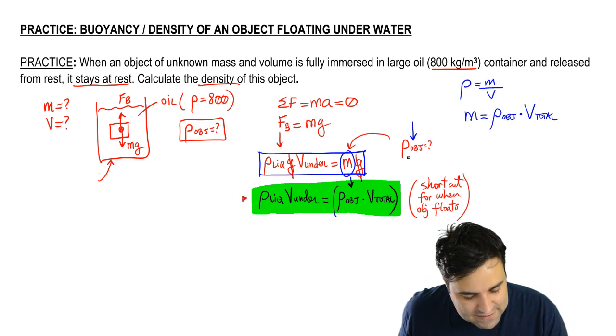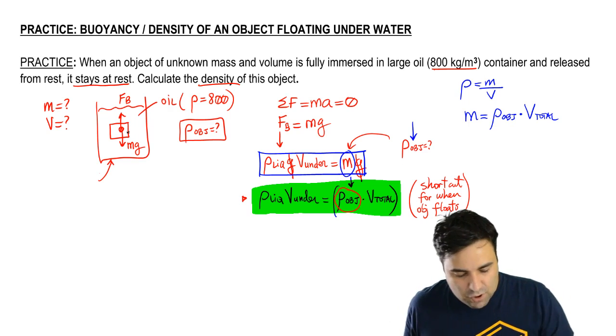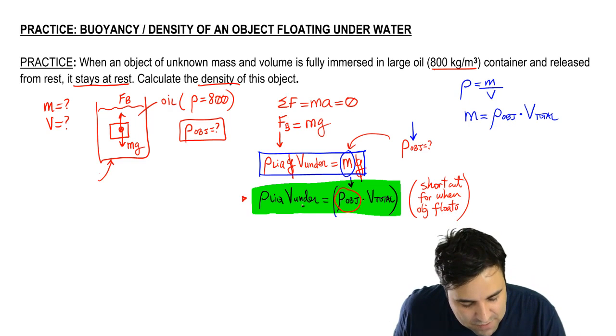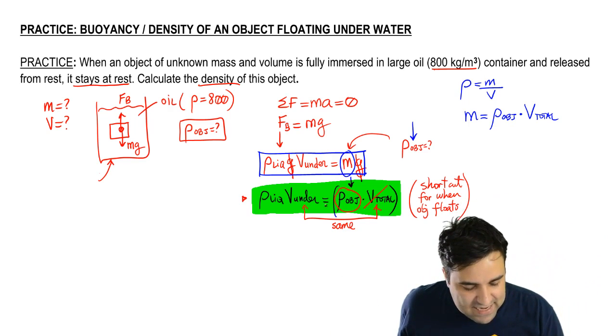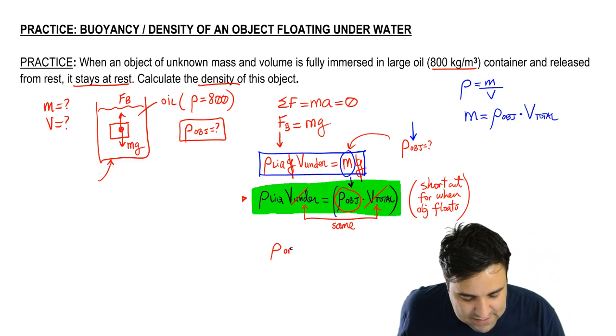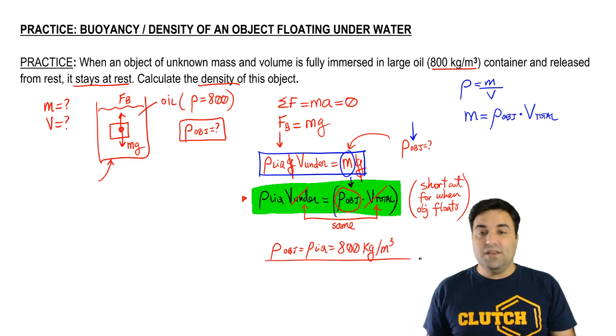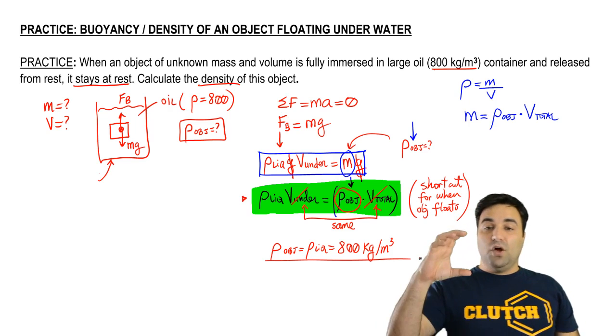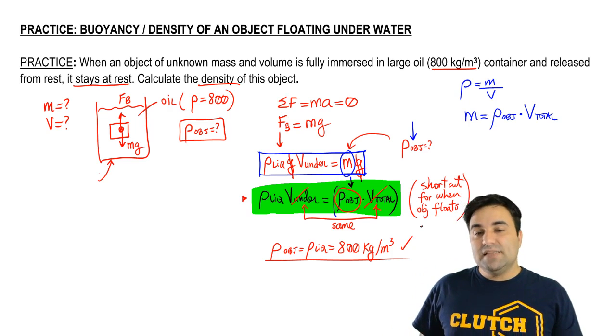But what we're looking for is the density of the object right here. Now, if we are fully submerged, fully immersed, what that means is that the volume under is actually the same as the total volume because the entire volume is under. So this is neat. I can actually just cancel these two and look what happens. The density of the object is simply the same as the density of the liquid, which in this case was given to us: 800 kilograms per cubic meter. So that's something that you might want to remember as well, which is if an object floats entirely submerged, it's because the density of the object is the same as the density of the liquid.